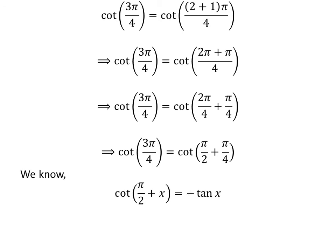We know the famous trigonometry identity: cotangent of pi upon 2 plus x is equal to minus tangent of x. The proof of this identity has been explained in the video appearing in the upper right corner, and the link is also given in the description. Applying this identity gives us cotangent of 3 times pi upon 4 is equal to minus tangent of pi upon 4.